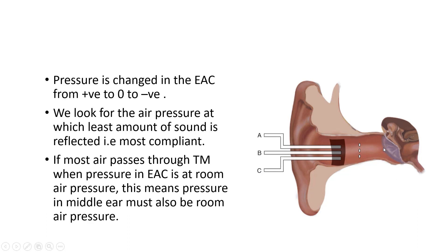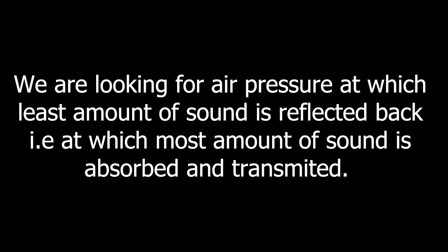When we further decrease the pressure from 0 to negative — creating a negative pressure in the external ear — the tympanic membrane again becomes stiff. It does not allow the sound waves to pass through to the middle and inner ear, and most of them are reflected back. Again the compliance is low and stiffness or resistance is high. We are looking for the air pressure at which the least amount of sound is reflected, or the most amount of sound is transmitted through the tympanic membrane to the middle and inner ear.